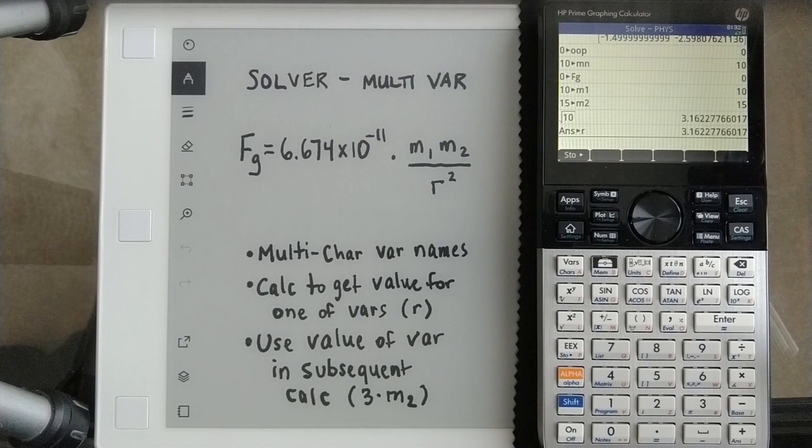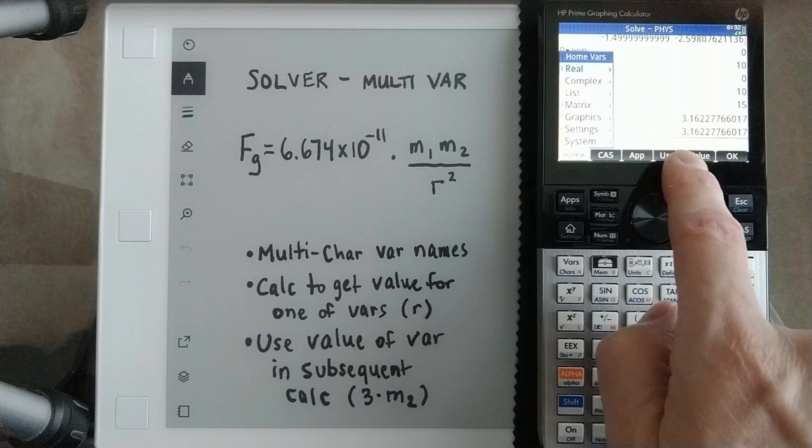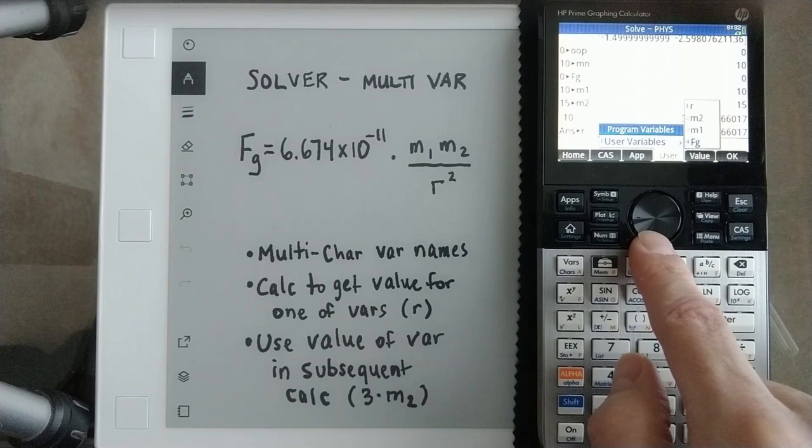Hope that's helpful. One other thing to mention on the variables when you dynamically assign them, just so you know, they show up. You hit vars, and they're over here under the user variables. So if you go into that menu by toggling over, typing a 1, there they are, r, m2, m1, and this f sub g. That's where those end up living. If you want to get rid of them, you just hit the delete key.